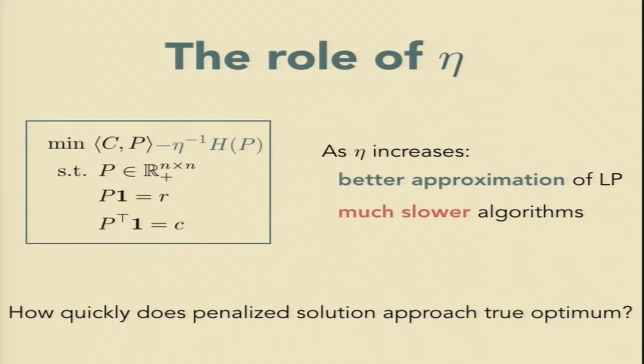So you have this trade-off. I want to keep eta large for accuracy, but I actually want it to be as small as possible in order to get fast algorithms. So this raises the question of exactly how quickly the solution to this penalized program approaches the true optimum as a function of eta. In other words, how big does eta have to be in order to get a reasonable approximation to my original program?